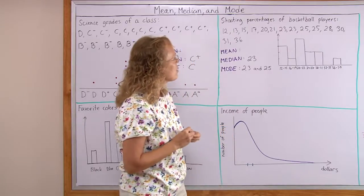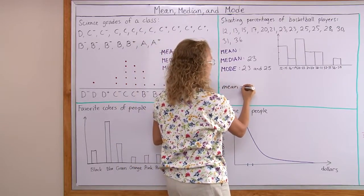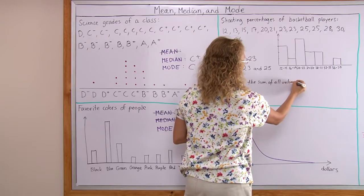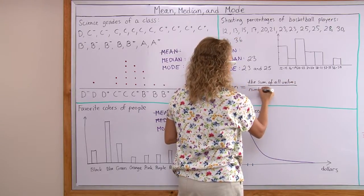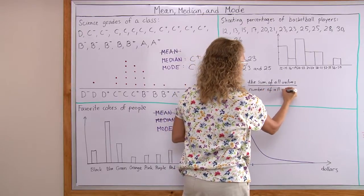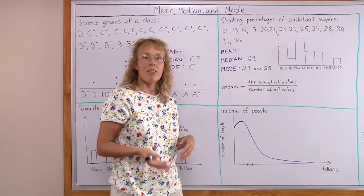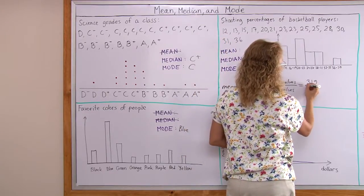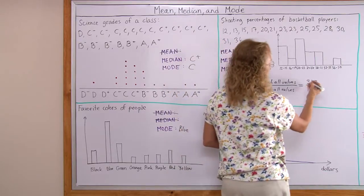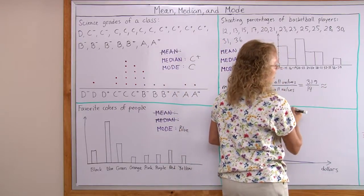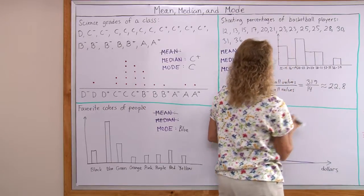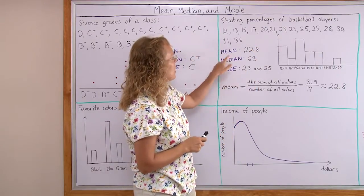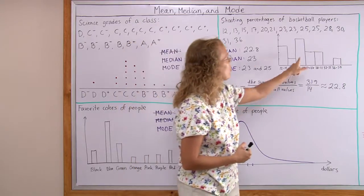And then the mean, now we can calculate the mean. It is the sum of all values divided by the number of all values, also sometimes called the average. And I calculated the sum before this video. It was 319 and we have 14 players there. So 319 divided by 14, you calculate that and you get about 22.8. So that is the mean. Notice it's pretty close to median. And both mean and median are describing this distribution well, because both of them are somewhere here.